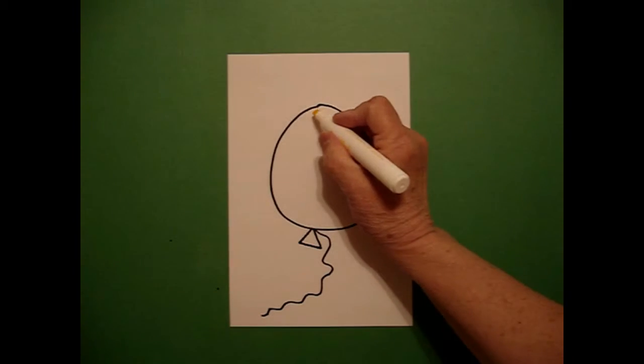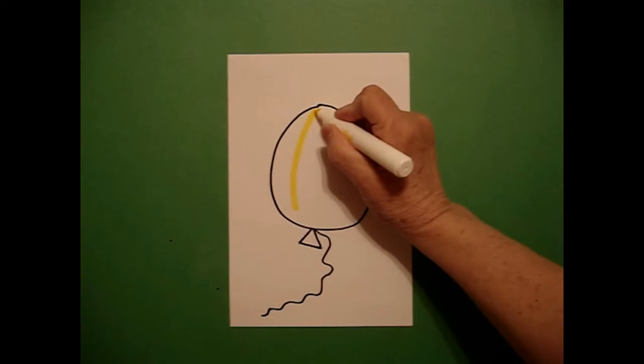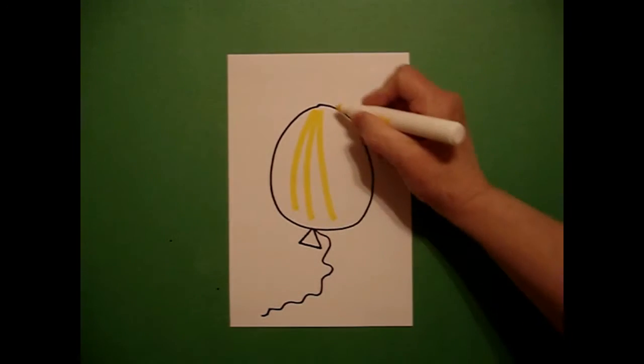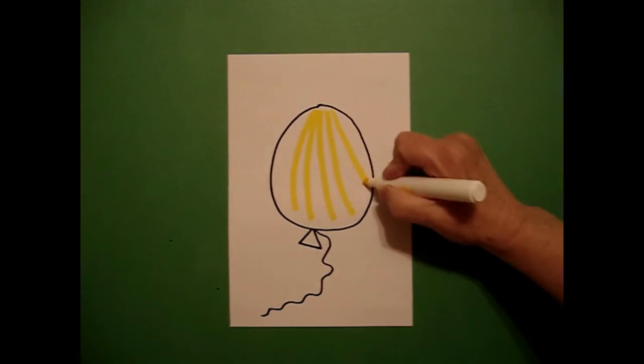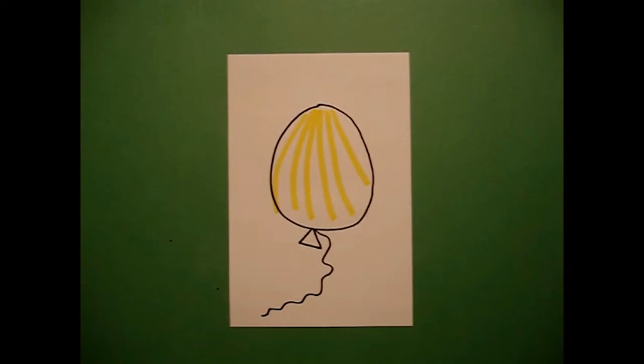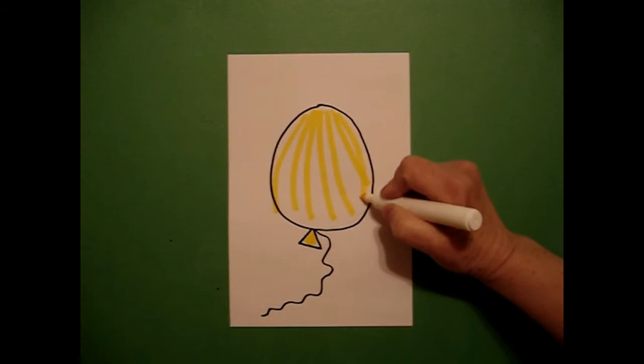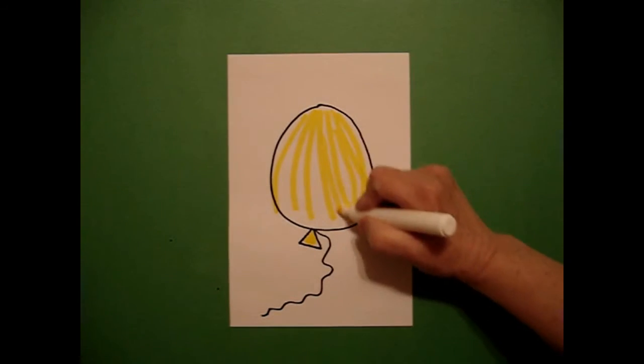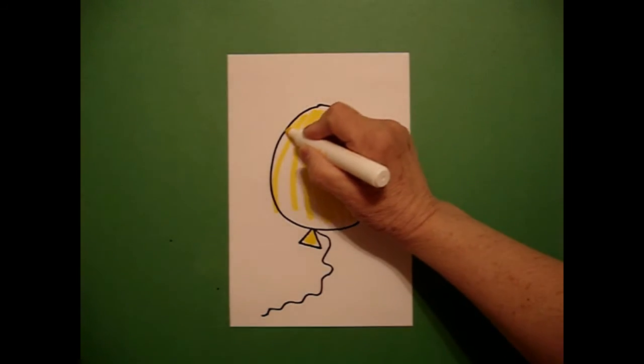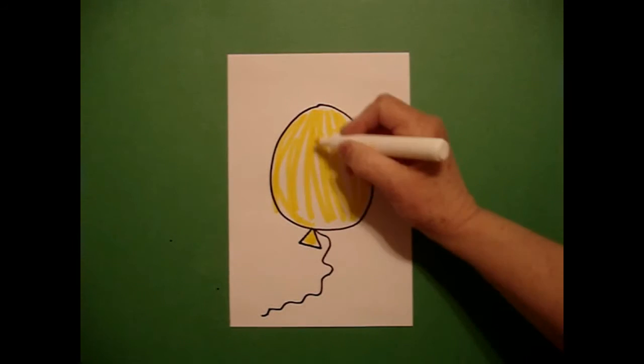So, let's see what it looks like as we color it. For this specific project, I just want to put some yellow marker lines and show you that you can make a design just doing straight lines, coloring my little triangle down at the bottom. Or, if you want to, you can fill this whole balloon in with yellow marker.